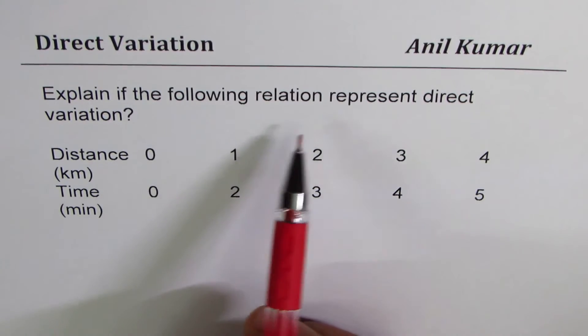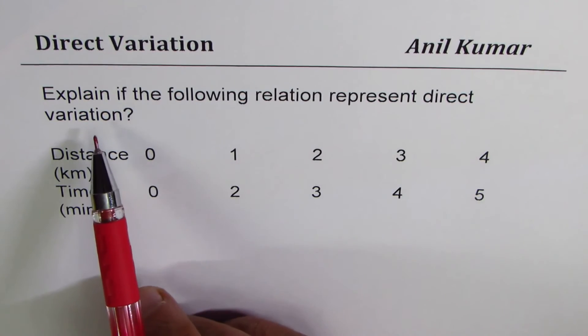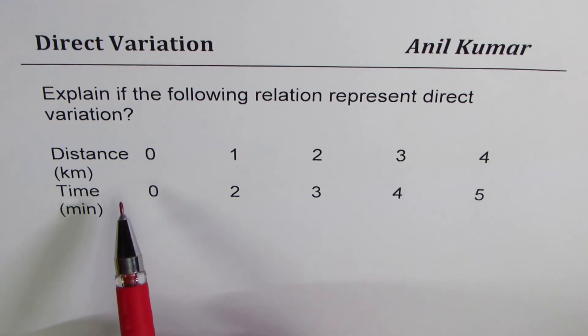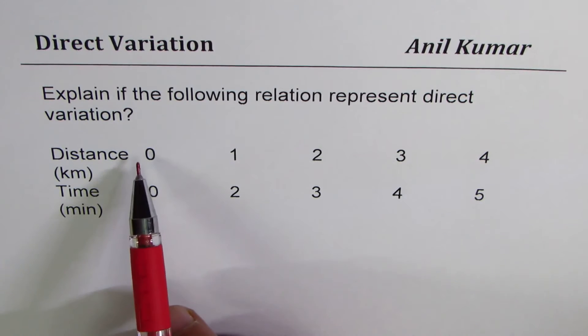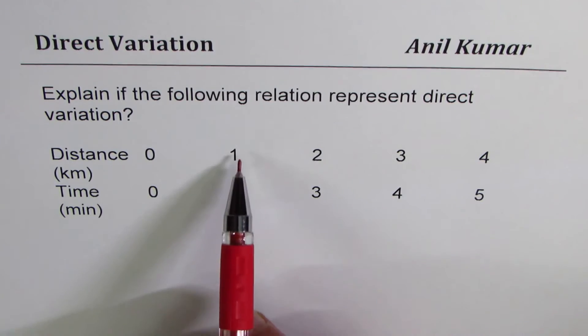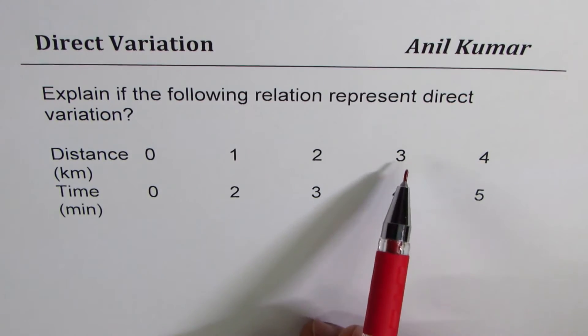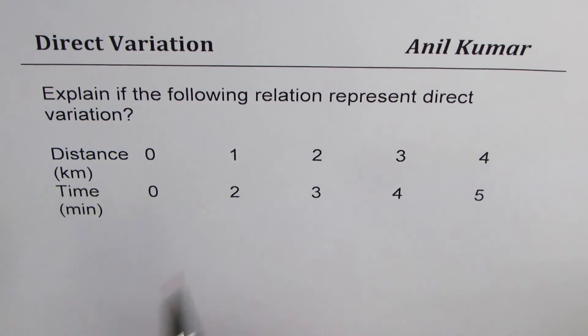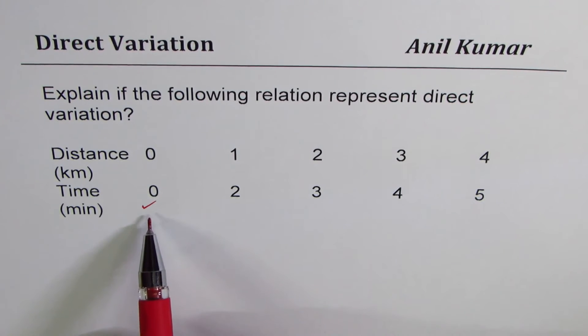Explain if the following relation represents direct variation. It is a similar table. Distance in kilometers, time in minutes: 0, 0; 1, 2; 2, 3; 3, 4; 4, 5. So the first criteria is met. That means the starting point is at the origin. Now let's see the difference.